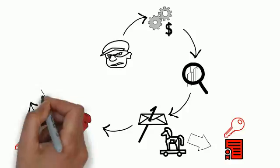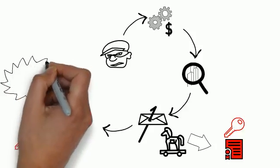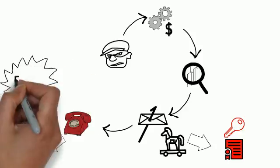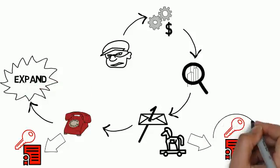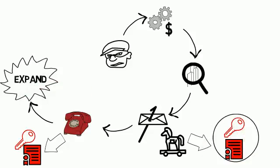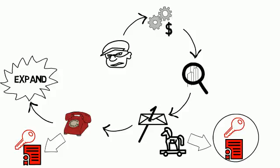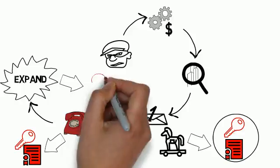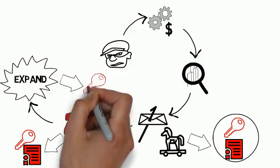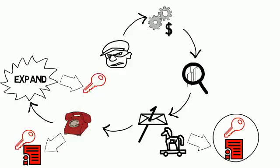Now that a foothold's been established, it's time to expand within the network to find additional valuable data. Remember those keys that were stolen from the victim's machine at initial entry? They will most likely be used as part of the expansion within the network. Using keys that have elevated privileges from employees will only help disguise the attacker's behavior.